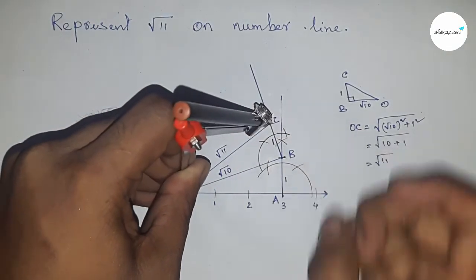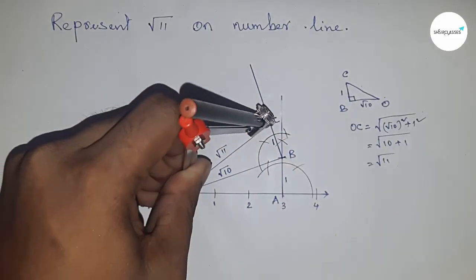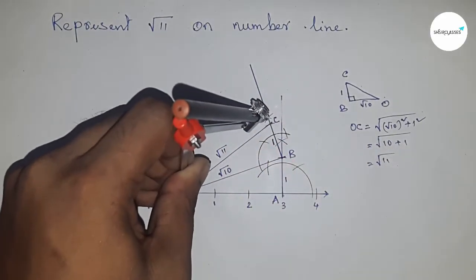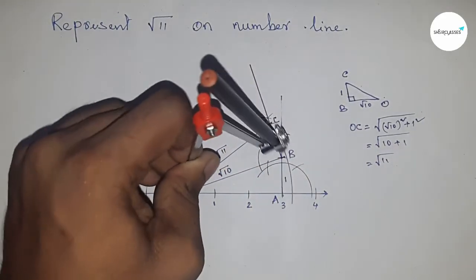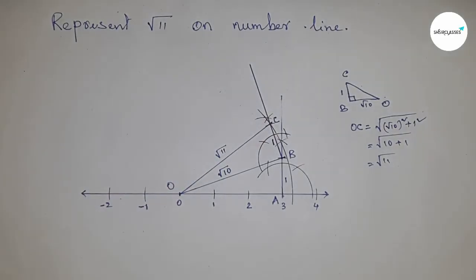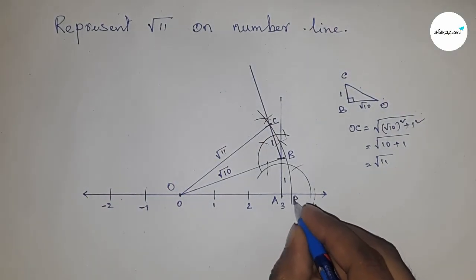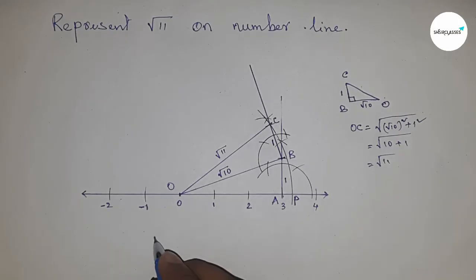Draw an arc which cuts the line at point P. Therefore, OC equals OP, which implies OP equals √11.